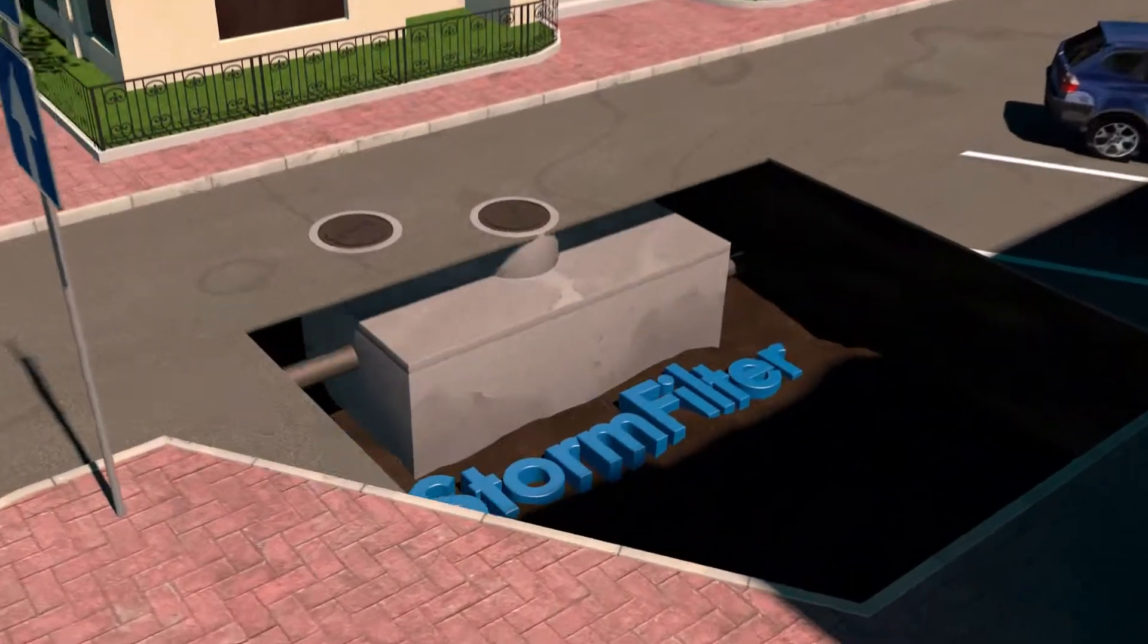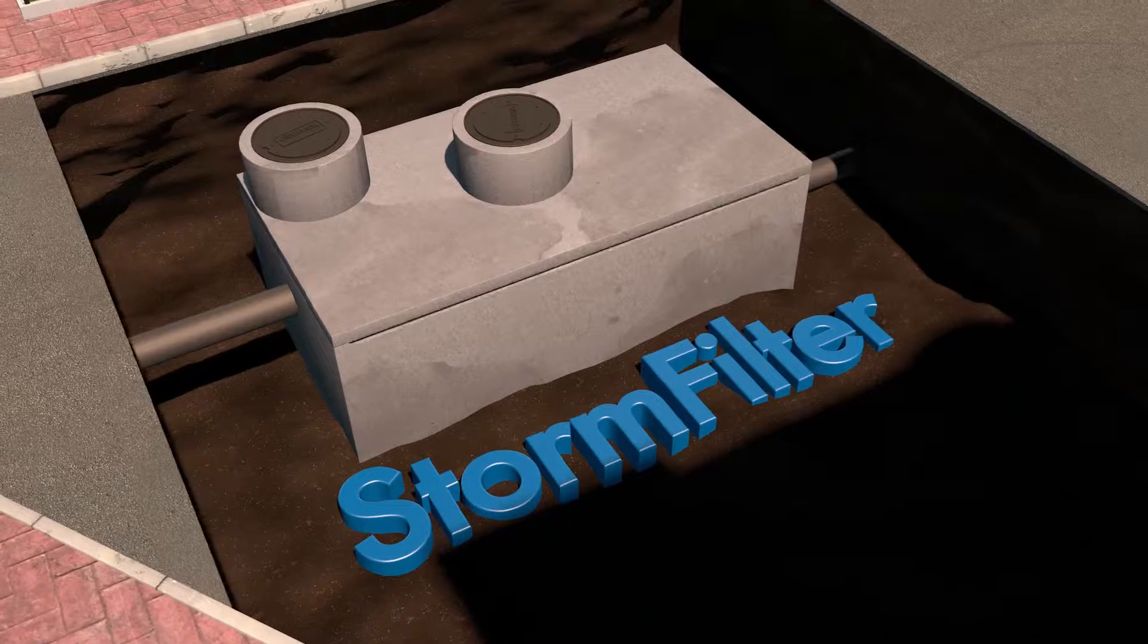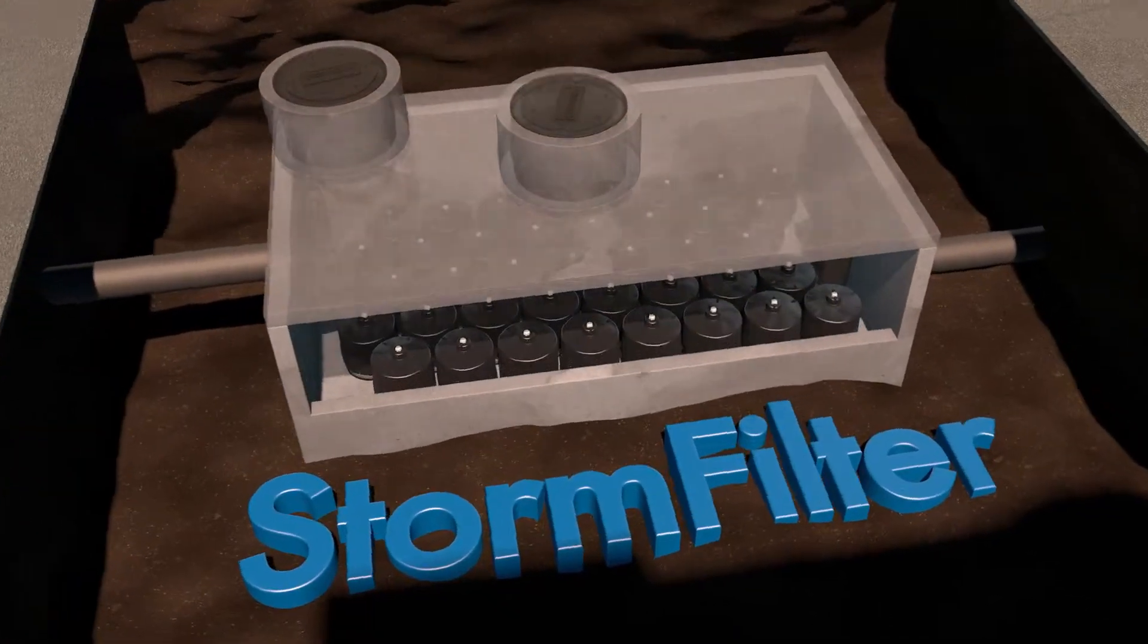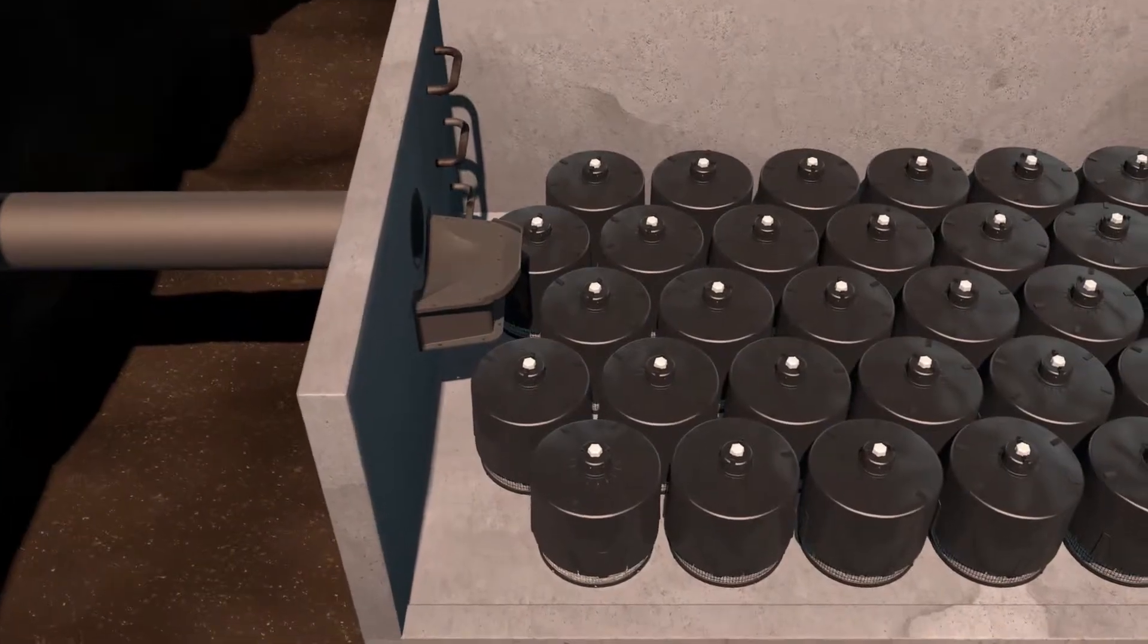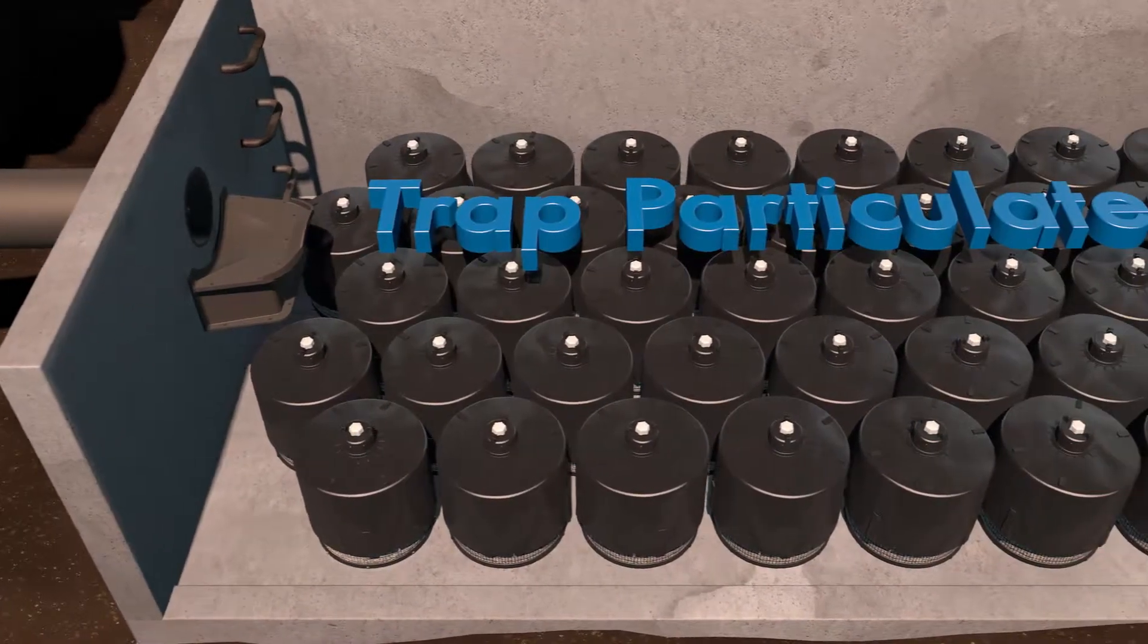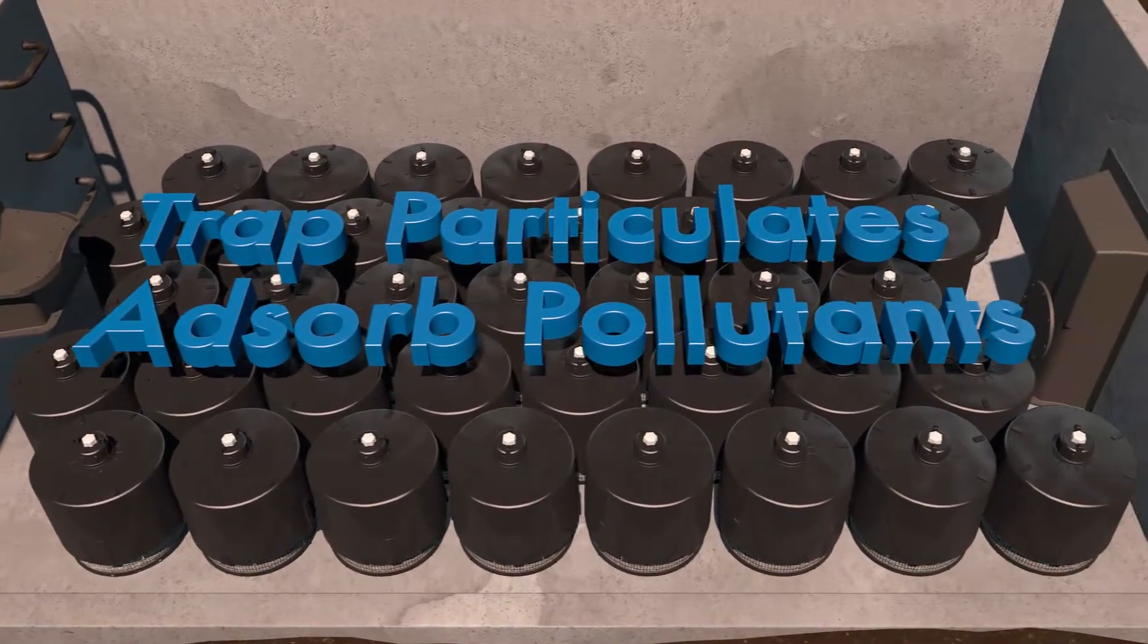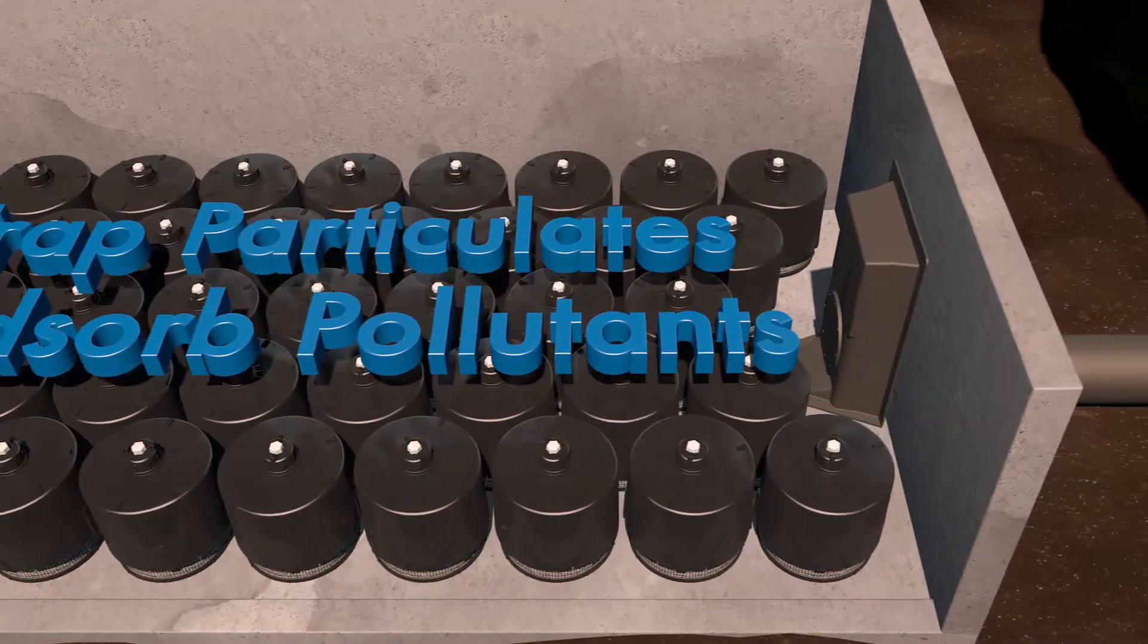To help meet these regulations, CONTEC developed the Stormwater Management Storm Filter, a stormwater treatment device comprised of one or more structures that house rechargeable, media-filled cartridges that trap particulates and absorb pollutants such as dissolved metals, hydrocarbons, and nutrients.